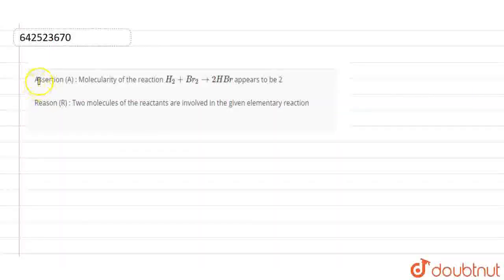Hello everyone, so the assertion here is that molecularity of the reaction H2 plus Br2 which gives 2HBr appears to be 2. And the reason here is that two molecules of the reactant are involved in the given elementary reaction. So let's find out which one is correct here.